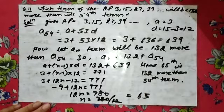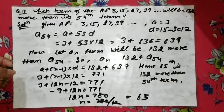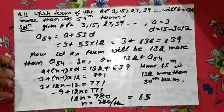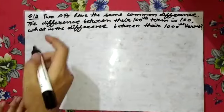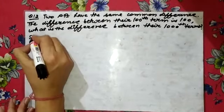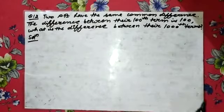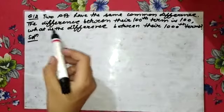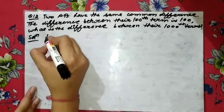This is how you solve this question. The statement may be worded differently sometimes, but you solve it accordingly. Now let us talk about question number 12: Two APs have the same common difference. The difference between their 100th terms is 100.